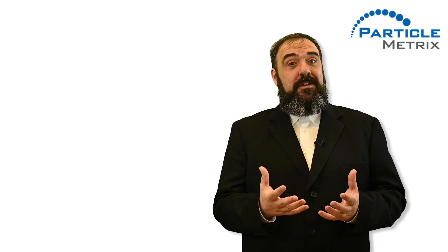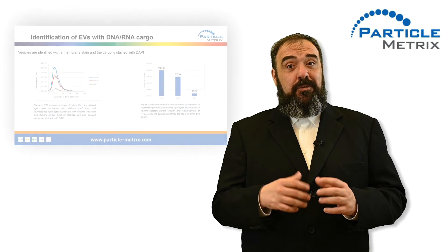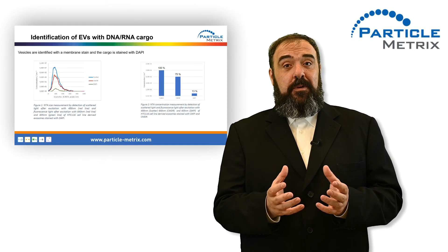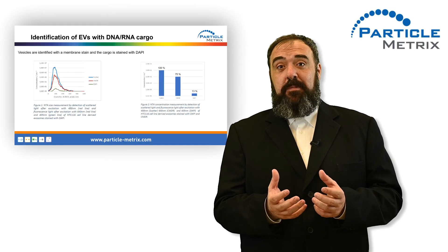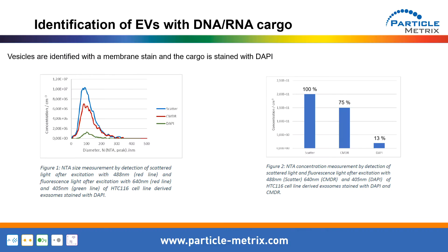But is fluorescent nanoparticle tracking limited to surface markers? Or is it also possible to identify cytoplasmic proteins or exosomal cargo? As shown in this slide, we successfully identified nucleic acid-containing vesicles in a commercially available EV preparation. Beside the membranous particles, we were able to detect DNA-RNA cargo by using DAPI. Since this dye can pass the membrane passively, a permeabilization step was not required.